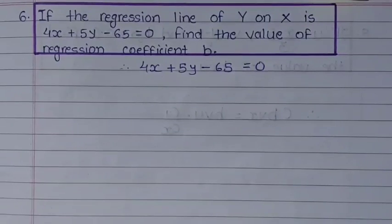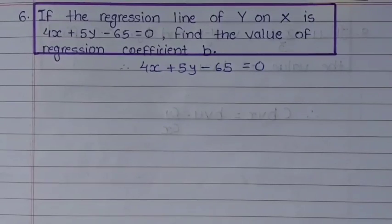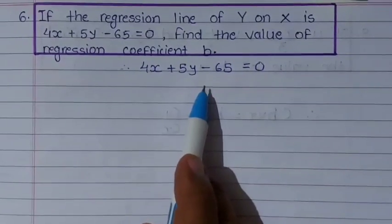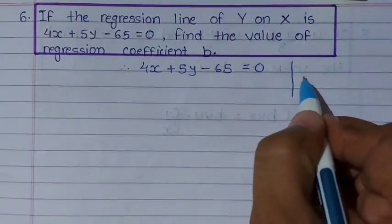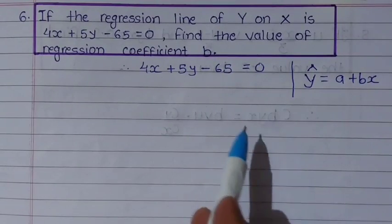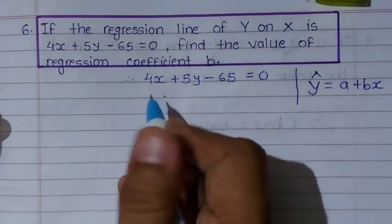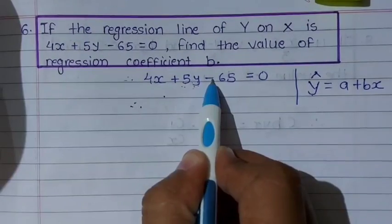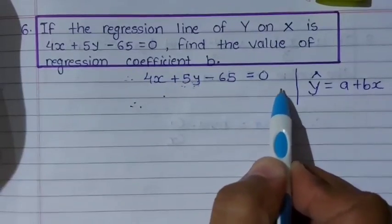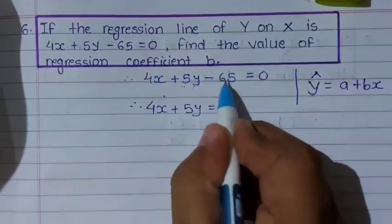b find करने के लिए, हमारे पास अगर regression line हो, तो उस regression line को हम regression model से compare करके a और b दोनों की value find कर सकते हैं। लेकिन यहां हमारे पास regression line नहीं है। हम जानते हैं कि regression line यानि ŷ = a + bx होती है। तो अगर इस equation को y के equal में convert करें — सबसे पहले 65 को equal to के उस तरफ send करते हैं — तो हमारे पास रह जाएगा 4x + 5y = 65।